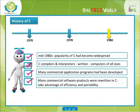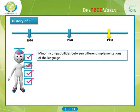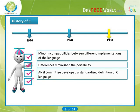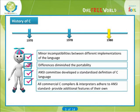Early commercial implementations of C differed somewhat from Kernighan and Ritchie's original definition, resulting in minor incompatibilities between different implementations of the language. These differences diminished the portability that the language attempted to provide. Consequently, the American National Standards Institute ANSI Committee X3 J11 has developed a standardized definition of the C language. Virtually all commercial C compilers and interpreters now adhere to the ANSI standard.